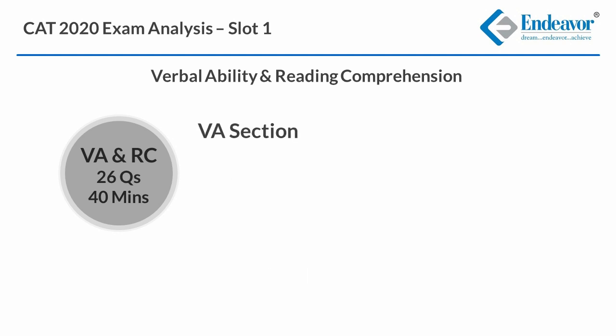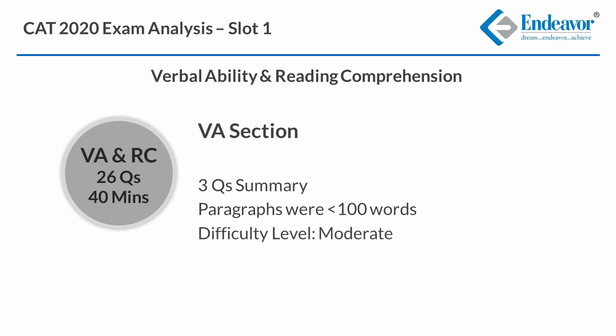The VA sectional had 8 questions — 3 summary questions. The summary paragraphs were not very lengthy, just under 100 words. These could be termed moderate difficulty because neither was the language abstract nor were the options extremely challenging. It did narrow down to 2 options but could still be managed.